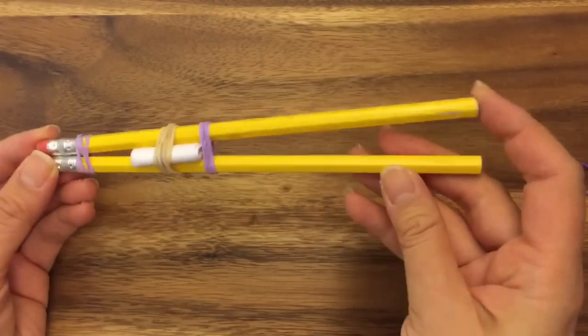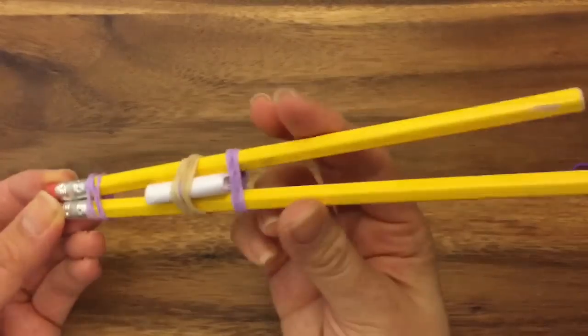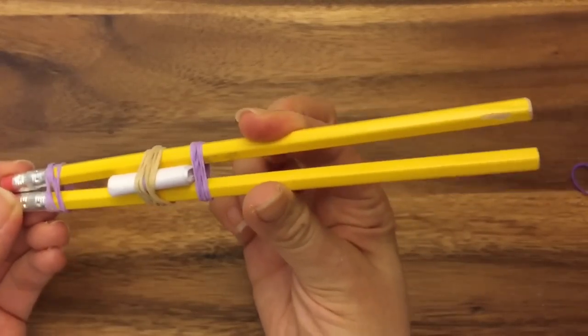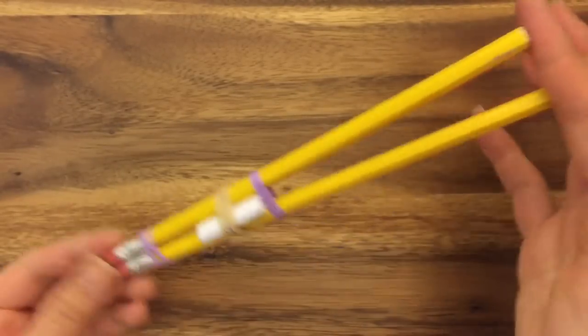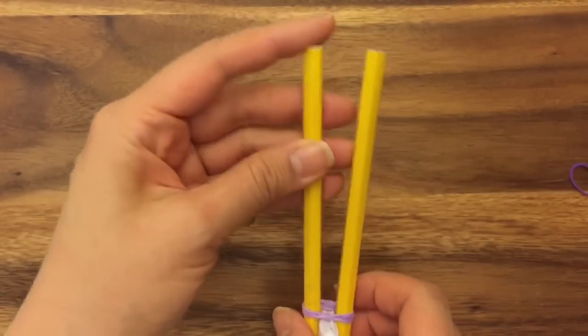And there you have your pencil loom. If this is too wide for you, then you could add another rubber band here to tighten it. See if you see how if I make this tight, then this gets smaller, but this is around the same width that I like to use.